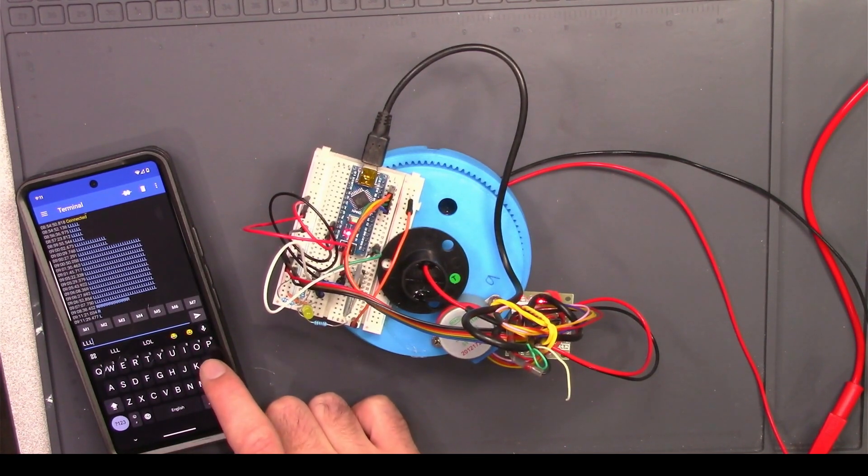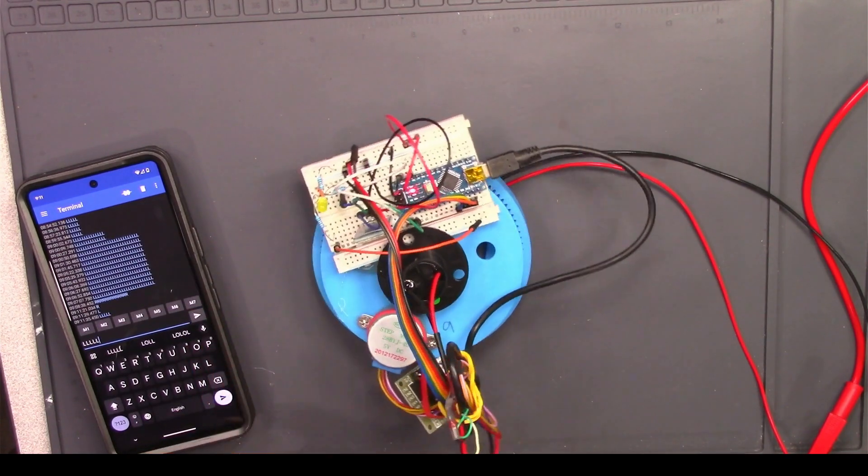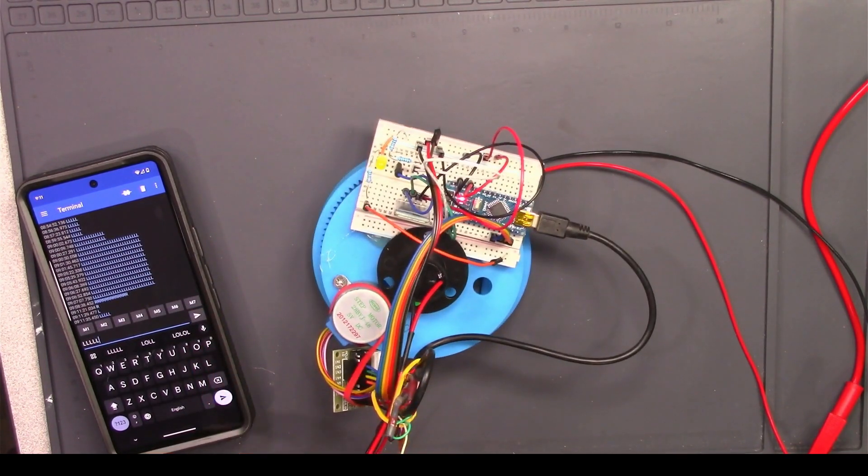In this case, I can just send L multiple times to make it spin multiple iterations of 10 steps.